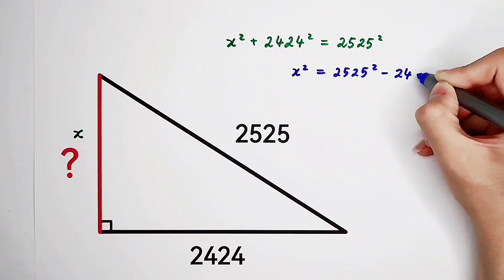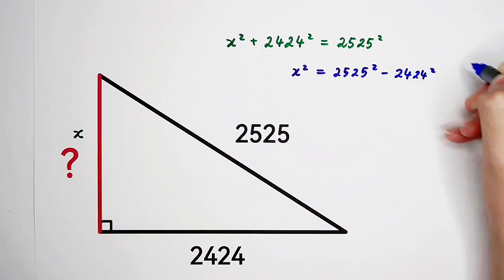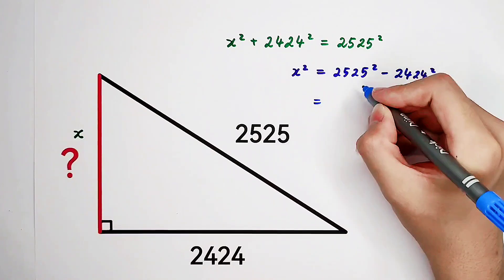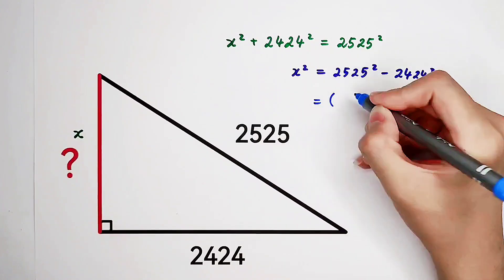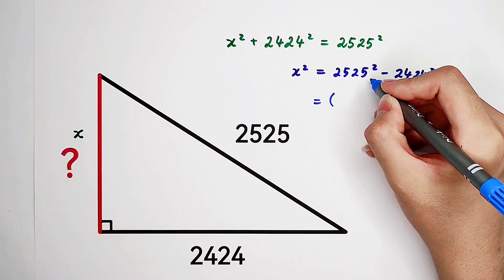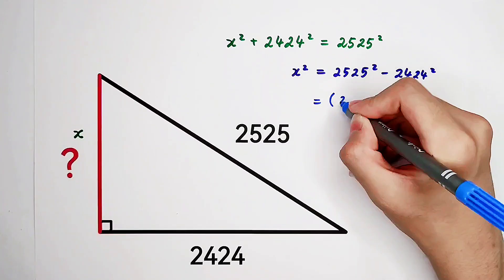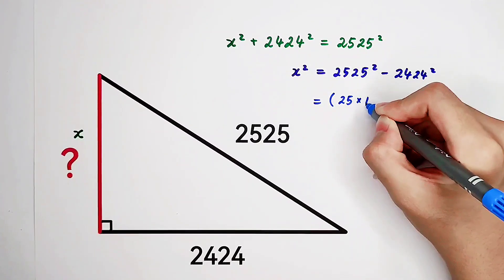Now, it's very easy. 2525 can be factored into 25 times 101.